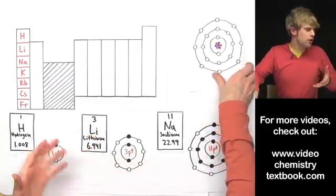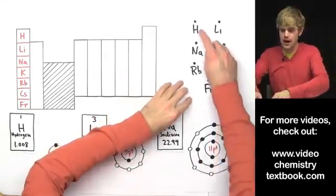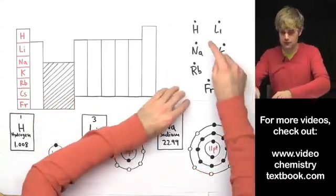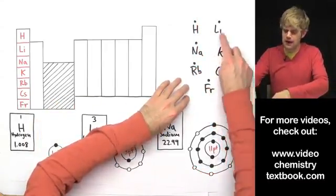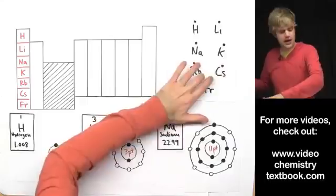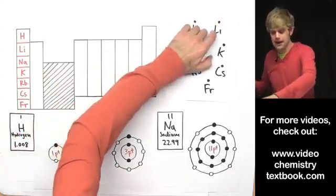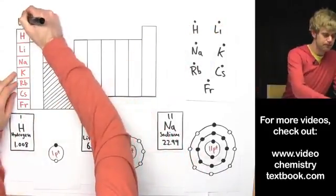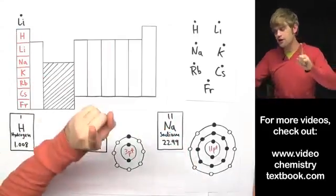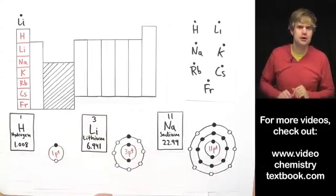There's a way we can write this to show that these elements have one valence electron. We draw what are called electron dot diagrams, sometimes known as Lewis diagrams, where we take the element symbol and put one dot next to it to show one valence electron. Here's how we'd write the electron dot diagrams for all elements in this column — for example, lithium with one dot.